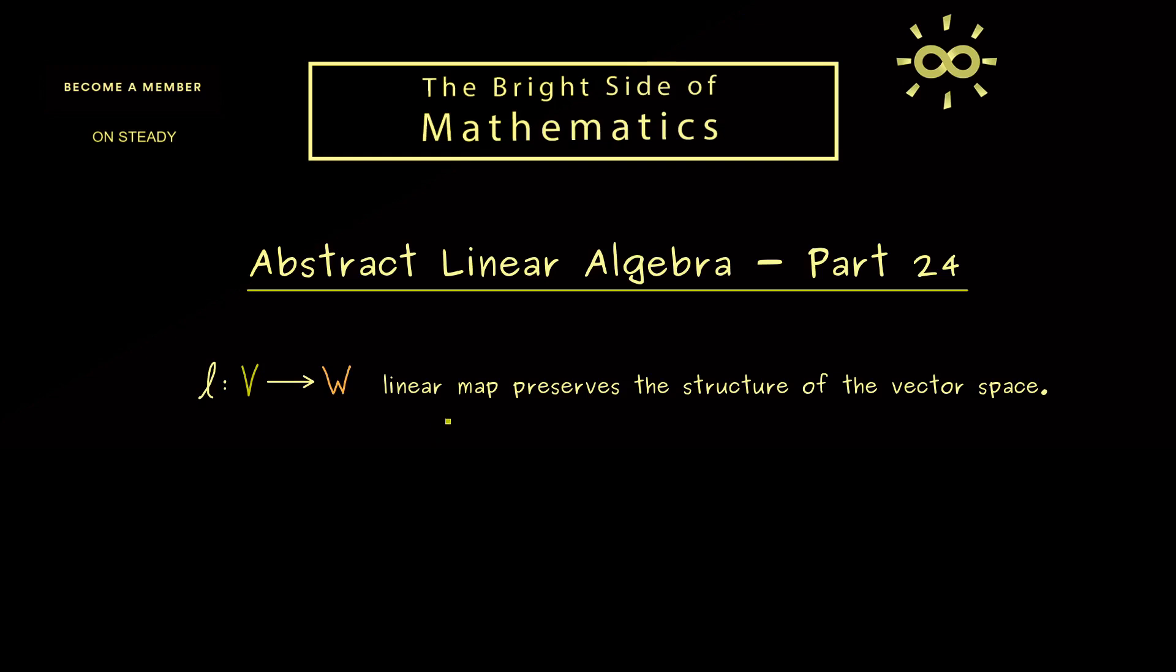And indeed the defining property for a linear map is that it preserves the structure of the vector space. And you know a vector space only has two operations which means a linear map conserves the addition and the scalar multiplication.